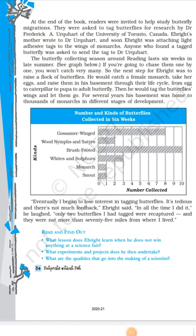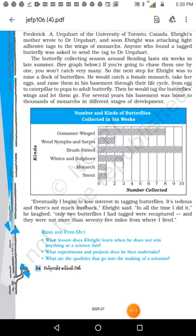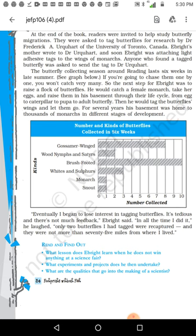At the end of the book, readers were invited to help study butterfly migrations. They were asked to tag butterflies for research by Dr. Frederick A. Urquhart of the University of Toronto, Canada. Ebright's mother wrote to Dr. Urquhart right away. Ebright began attaching light adhesive tags to the wings of monarchs. Anyone who found a tagged butterfly was asked to send the tag to Dr. Urquhart.